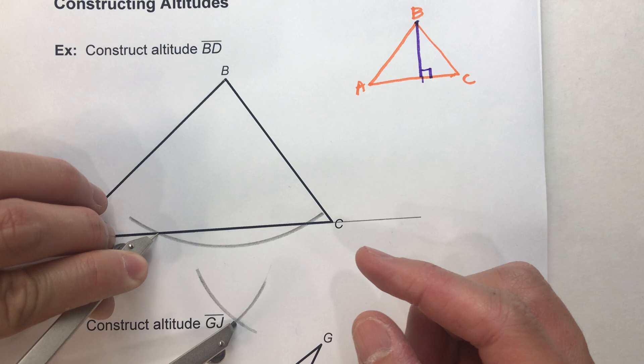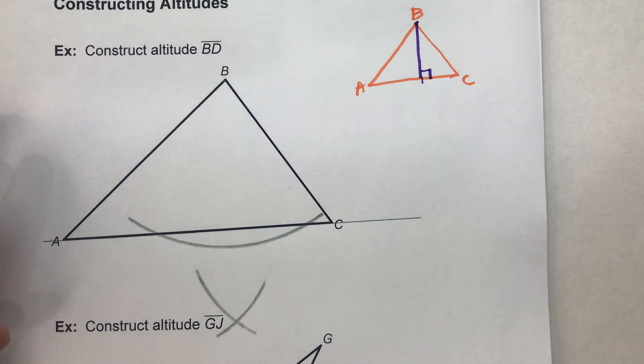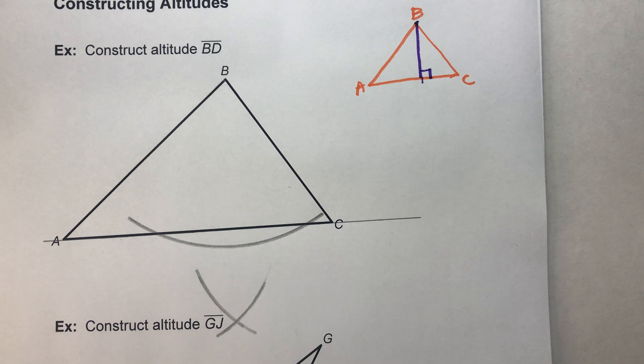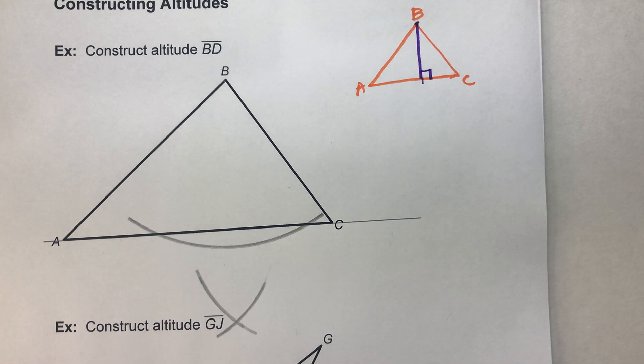Now what am I basically doing? I'm basically doing the same construction that we've done before. We've done this construction of constructing a perpendicular line through a point.